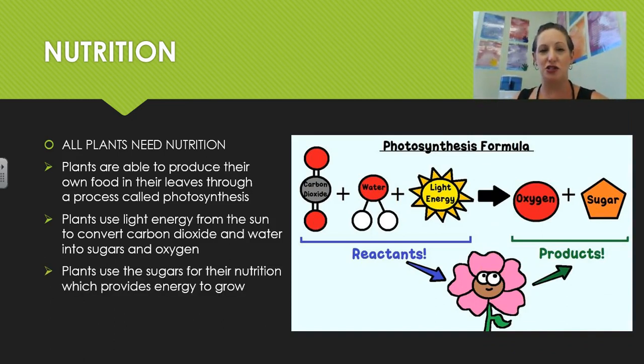And plants use the sugars for their nutrition, which provides the energy that they need to grow. So in the picture on the left, you can see the carbon dioxide and the water and light reacts together to produce oxygen and sugar, which it uses for its nutrition.